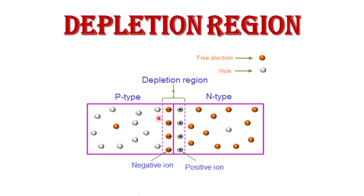What is the depletion region? The region near the junction on both sides where immobile ions are collected — negative immobile ions on the p-side and positive immobile ions on the n-side — is called the depletion region. This region has no free charge carriers such as electrons or holes; in other words, this region is depleted of free charge carriers. This region is also known as the space charge region. At equilibrium, the depletion region widens to such an extent that electrons can no longer cross the junction.